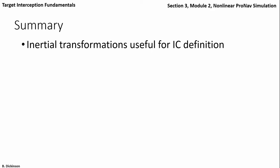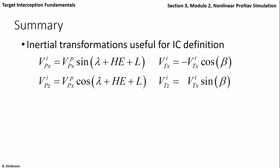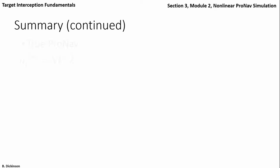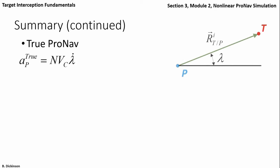Let's summarize some key equations. To define the kinematics initial condition, we transform the velocity of the pursuer and the velocity of the target in their respective coordinate systems to the inertial coordinate system simply through direction cosine matrix transformation. The first block in the numerical integration was computing the true pronav input — closing velocity and line-of-sight rate — determined from the kinematic state vector. Taking the true pronav inputs VC and lambda-dot and substituting into the true pronav law, the true pronav command is perpendicular to the line-of-sight direction, resolved in the inertial coordinate system for implementation in the kinematic equations.